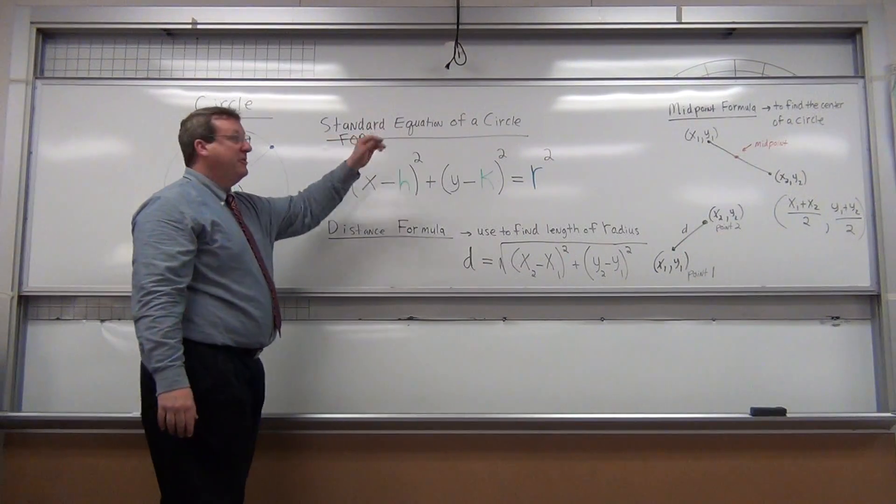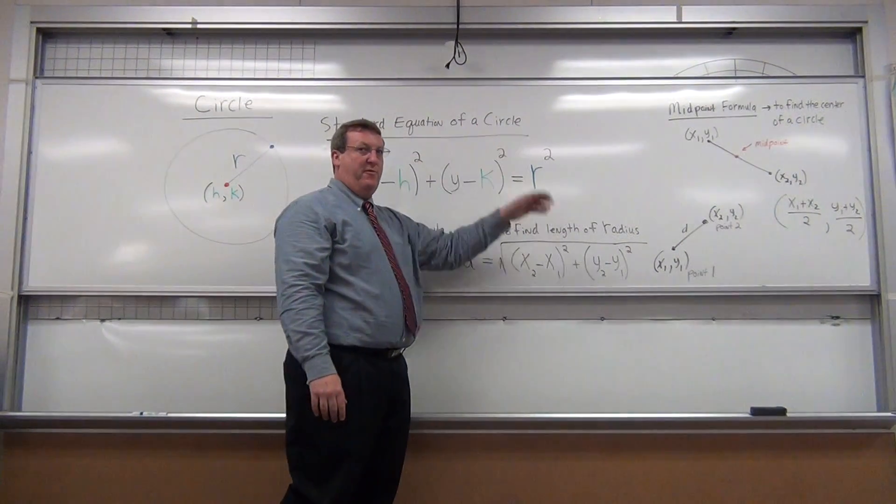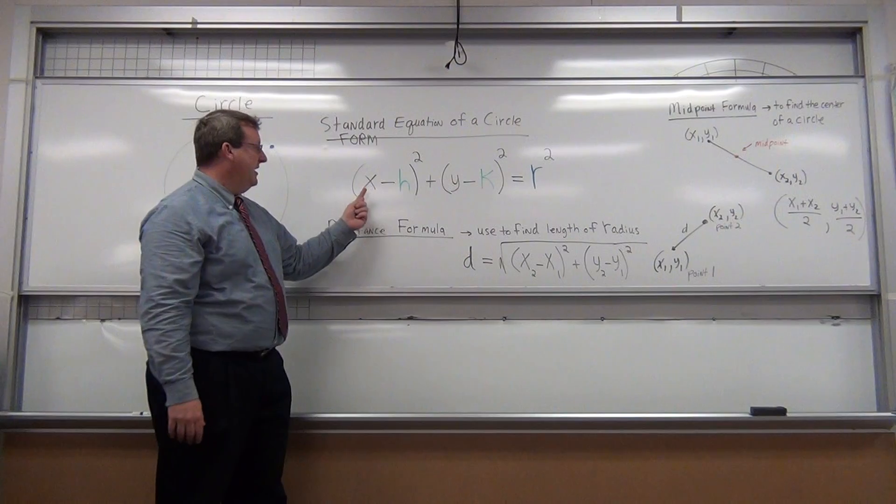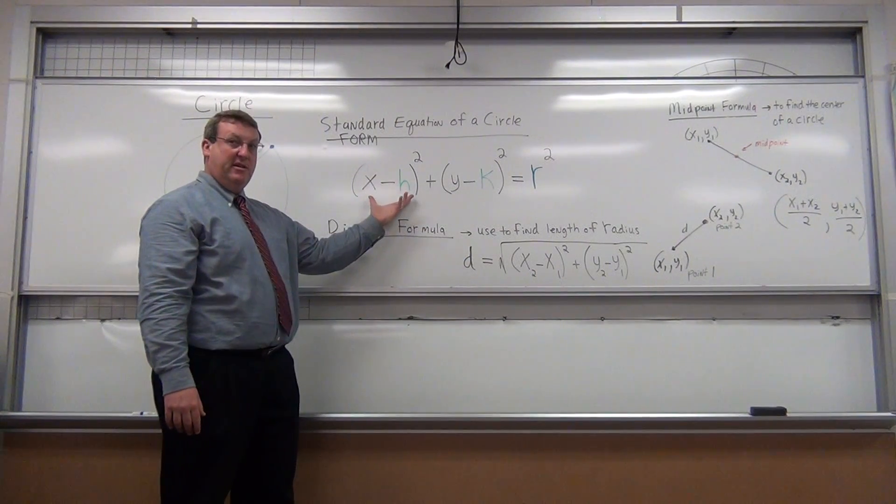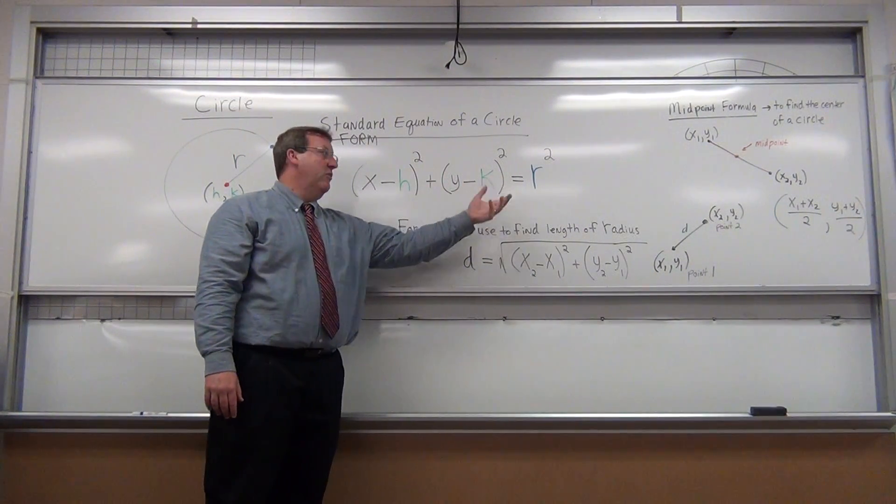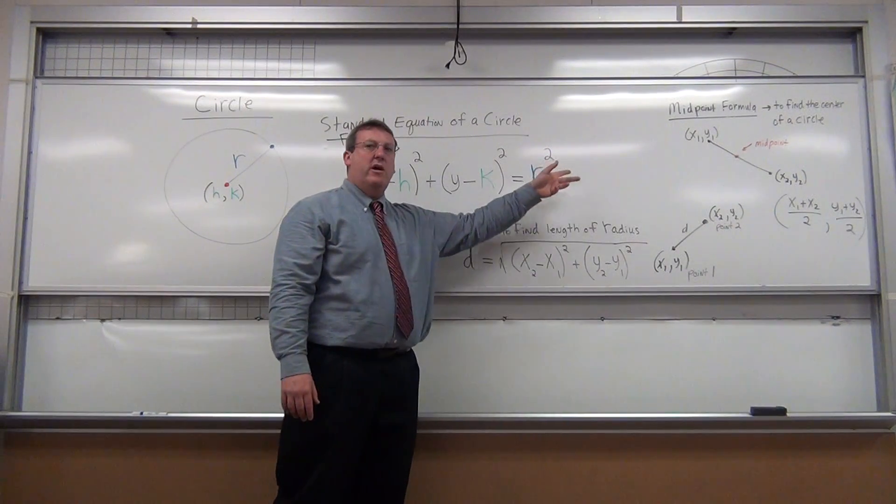Well, there's a standard equation of a circle. This is a standard form. It turns out it's written (X - H)² + (Y - K)² = R².